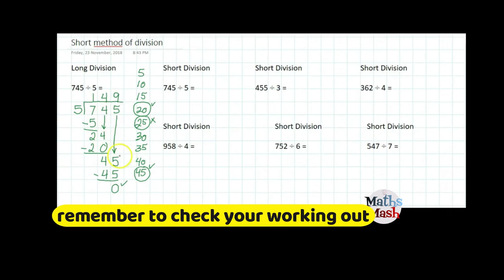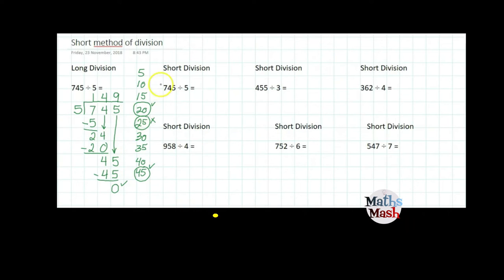Always make sure you check your work. Now I'm going to have a look at the same division question but using short division. Give yourself a little bit extra room. I write my 745, my dividend, in the house and my divisor on the outside. How many sets of 5 going to 7? That's 1.